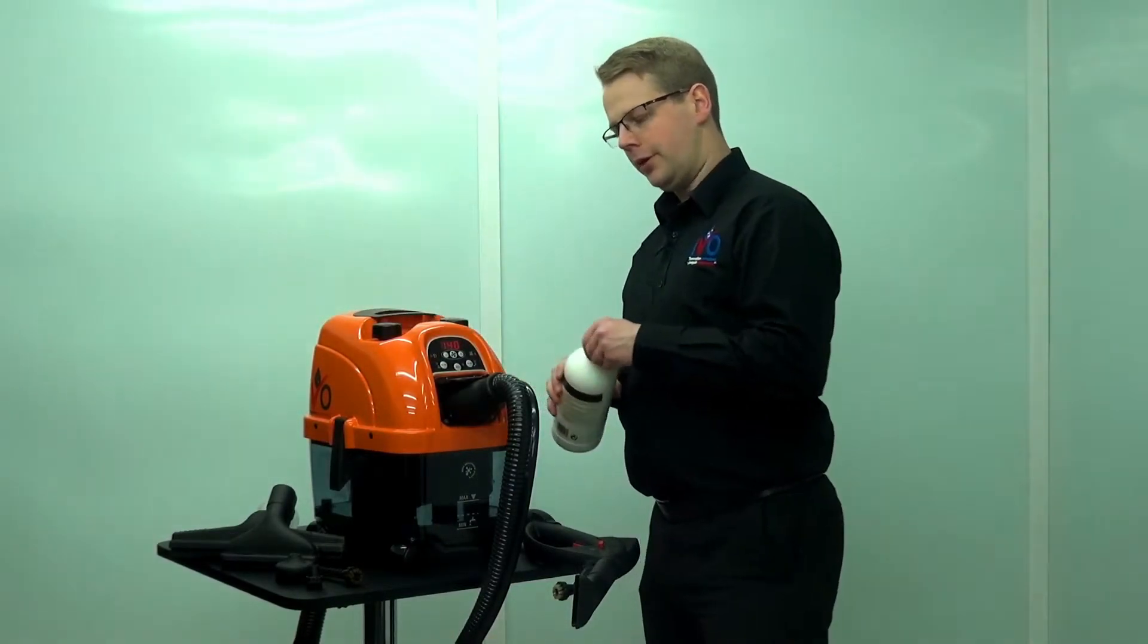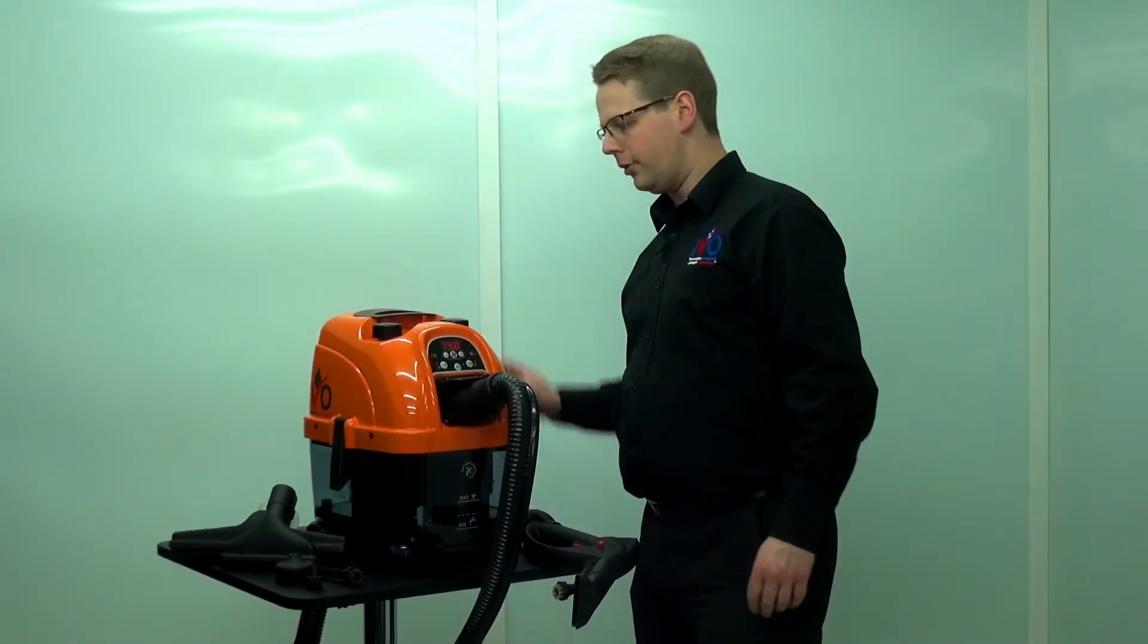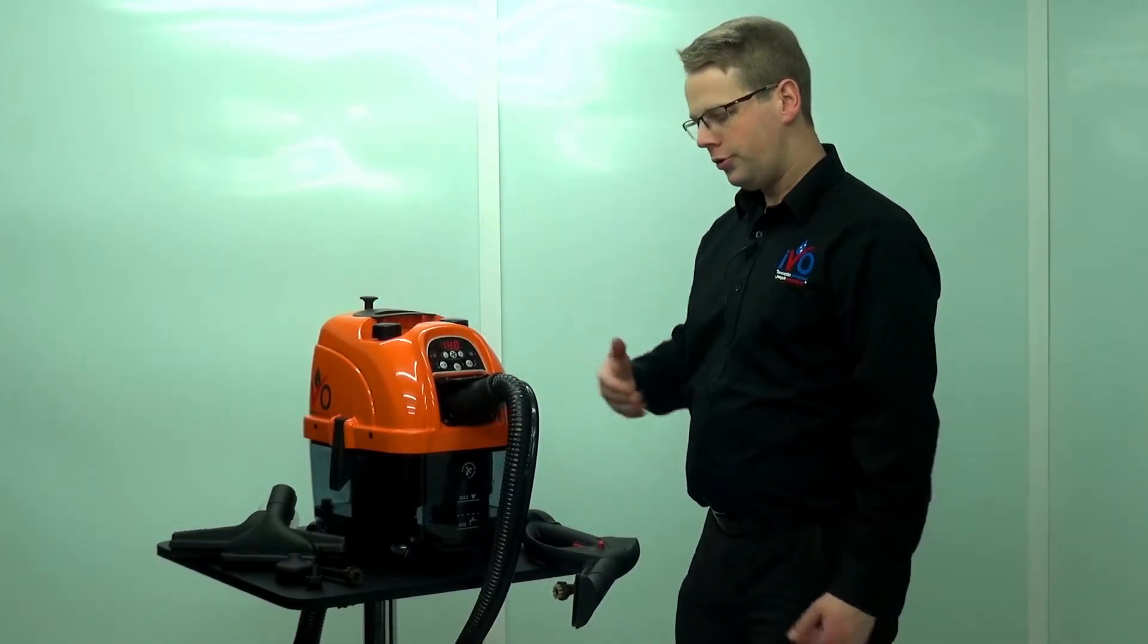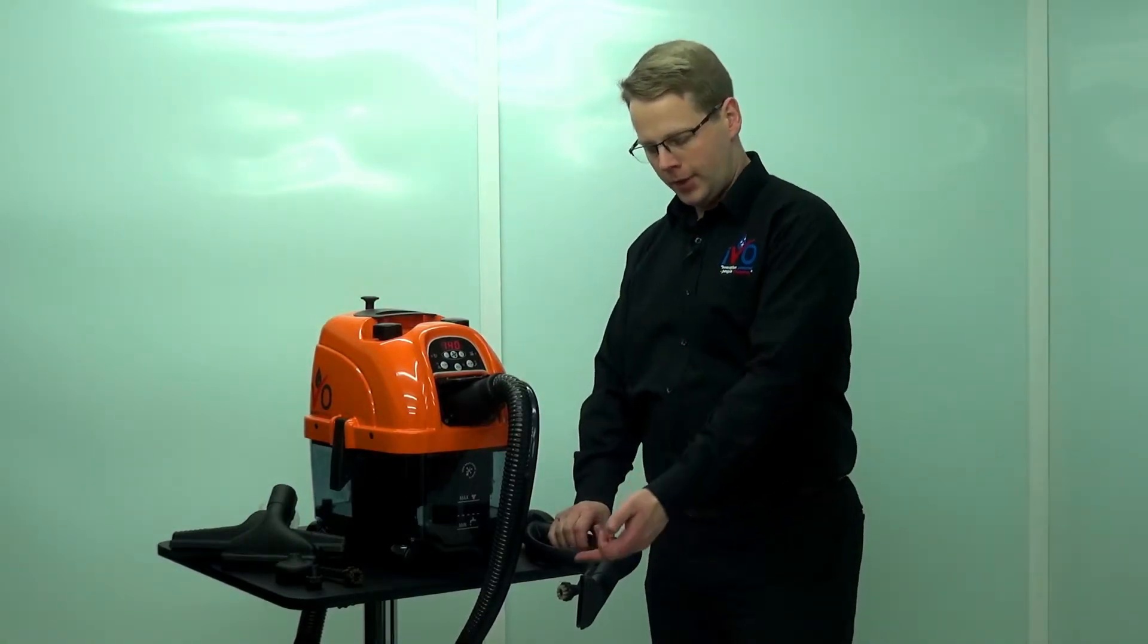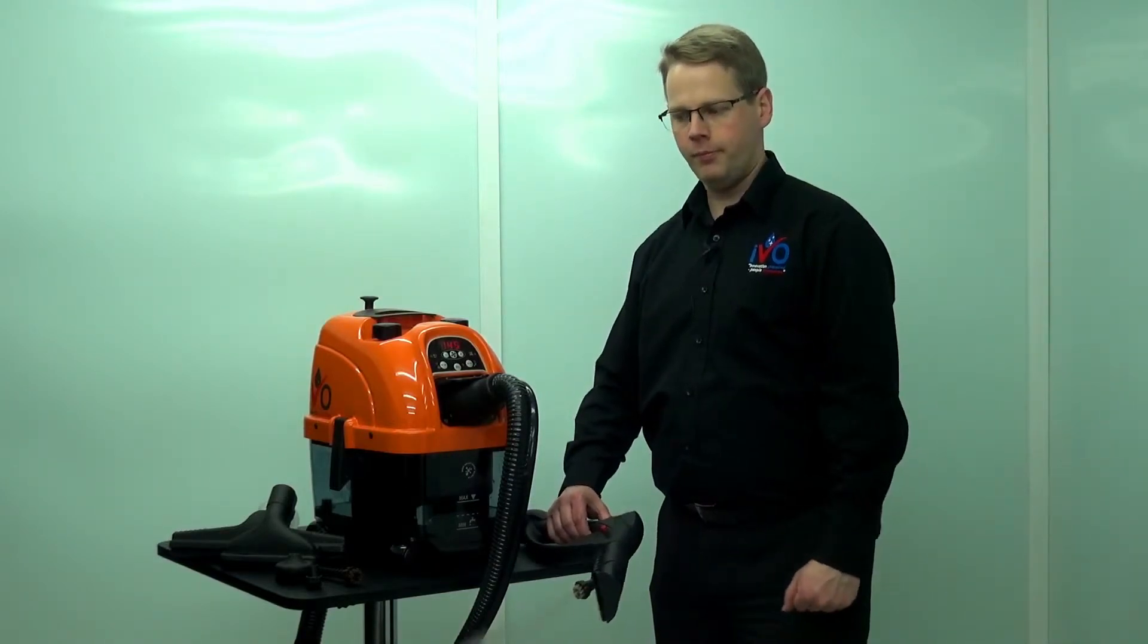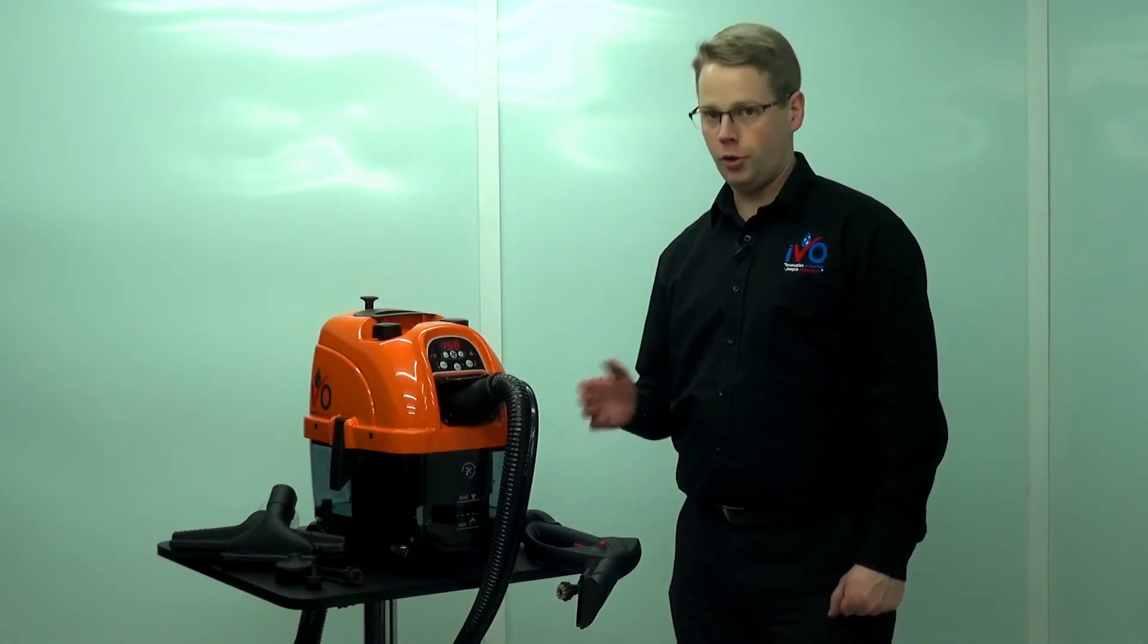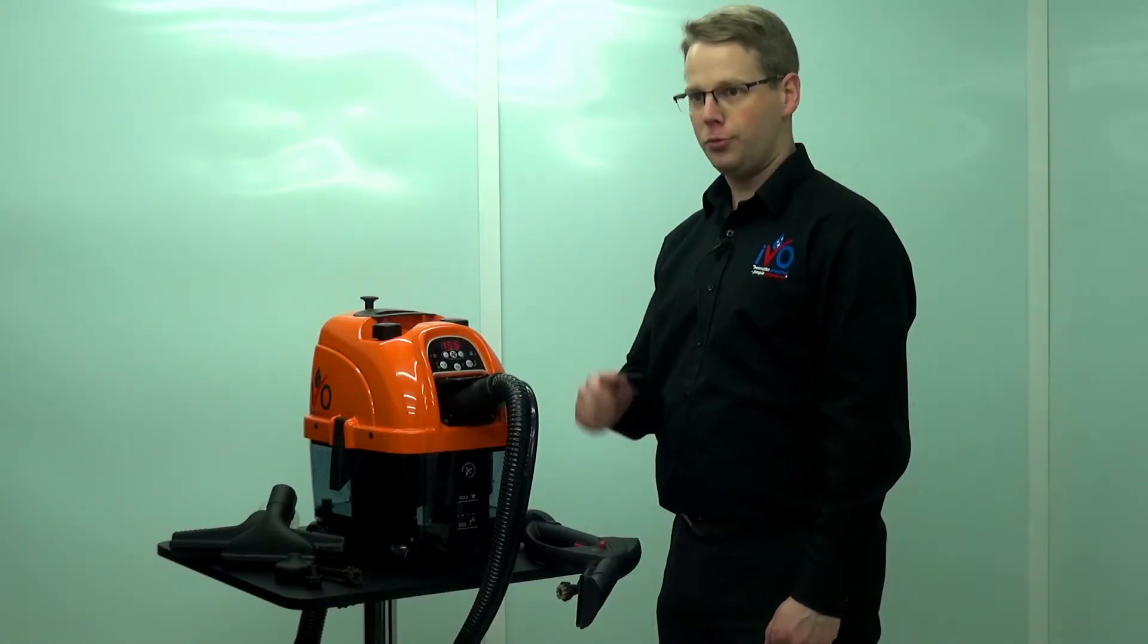Now I've added a reasonable amount of that detergent. The detergent sensor here has said okay, I've got enough to use. That means you can turn on the steam with the trigger and you get the detergent coming out with the steam. A completely unique feature of the iVo steam machines that you won't find anywhere else, and it's really useful.